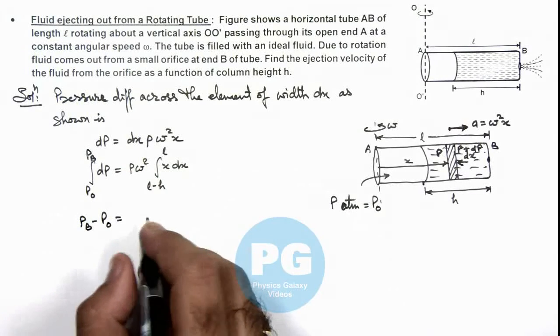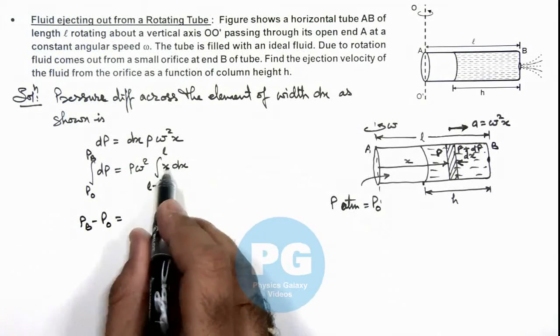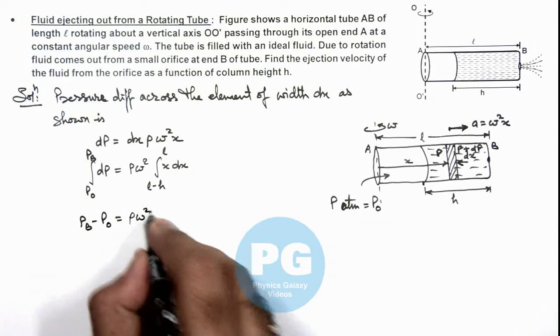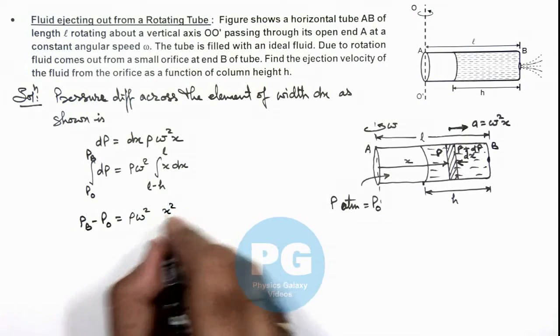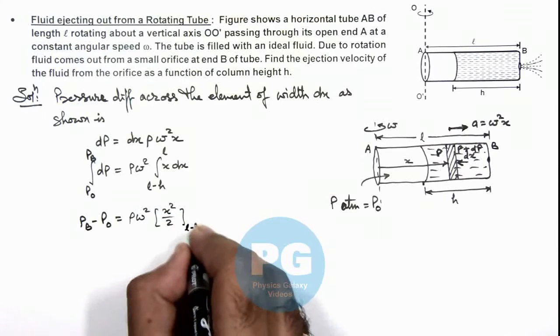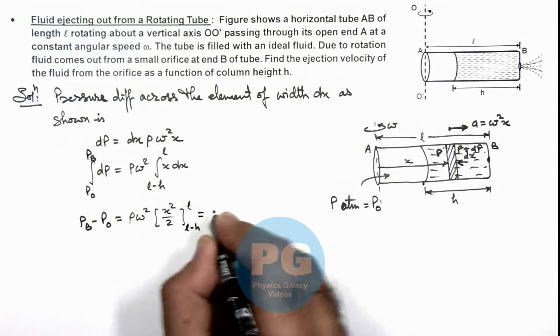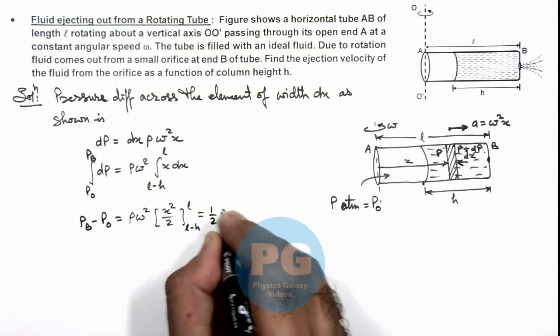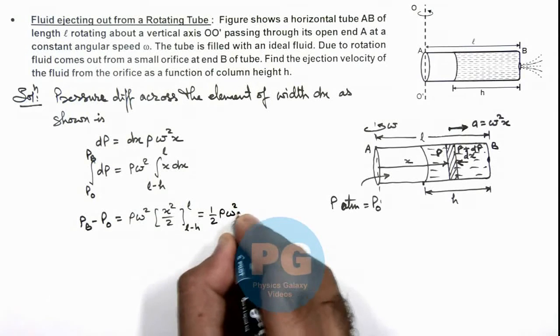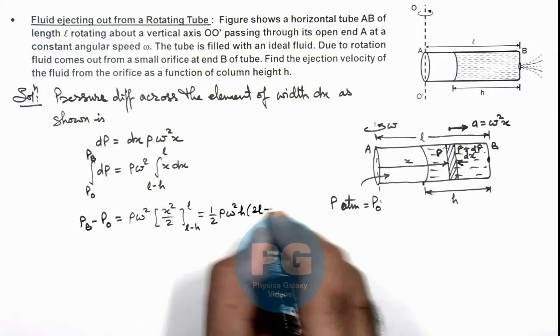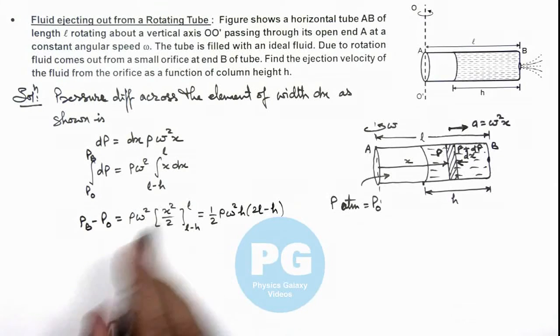integrating this will give us rho omega squared, this is x squared by 2. If we apply limits from L minus h to L, the result will be half rho omega squared h multiplied by 2L minus h. You can substitute the limit and simplify it.